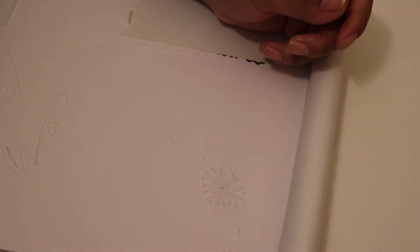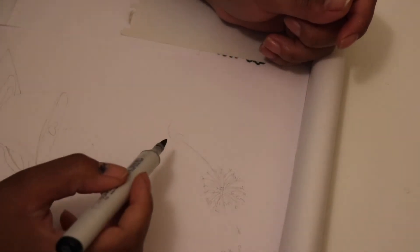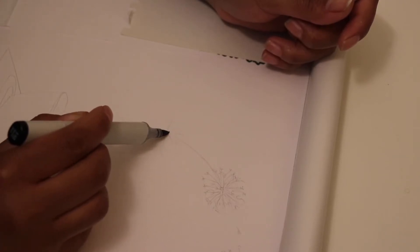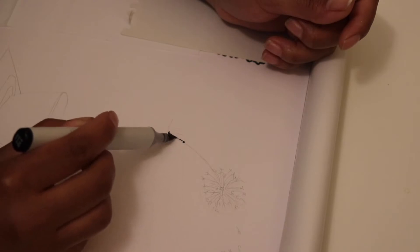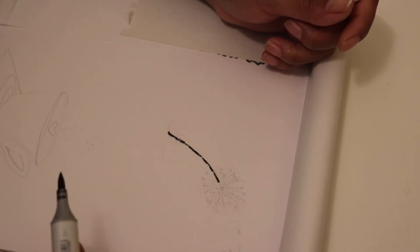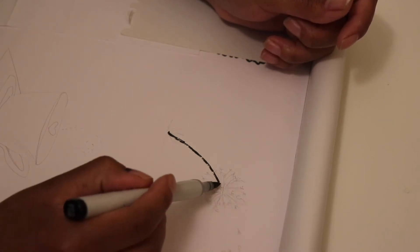So the first thing we're going to do is we're going to make a curved line on our paper like this. Like that. And on the end of that line, you want to make a big dot. Like that.